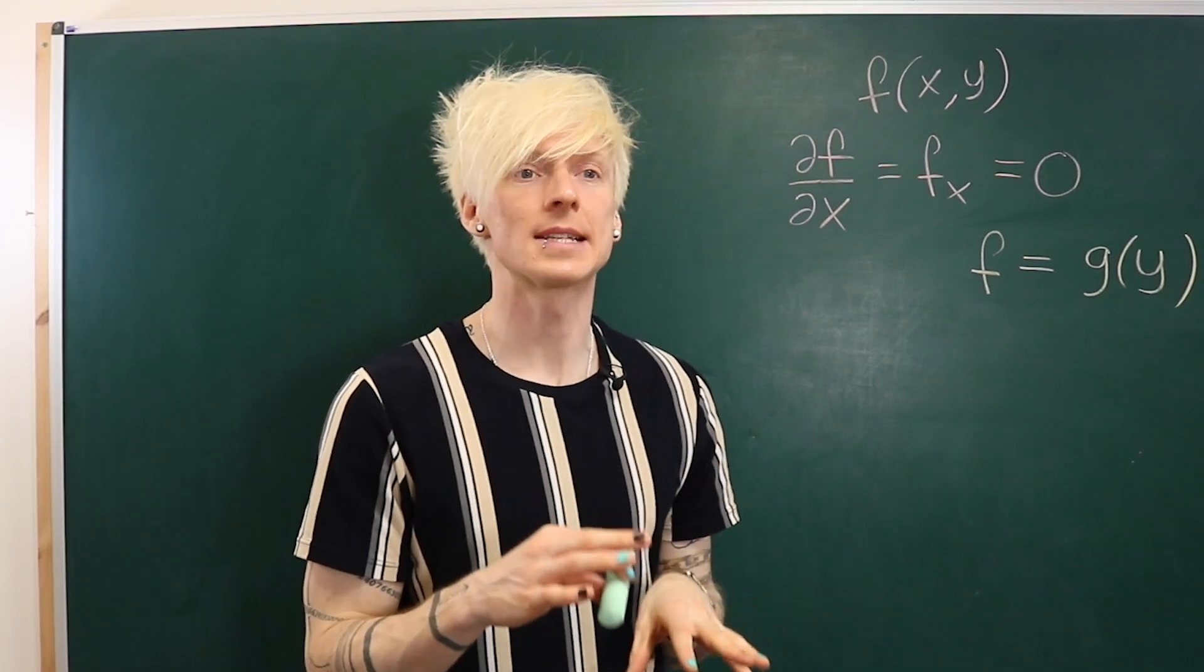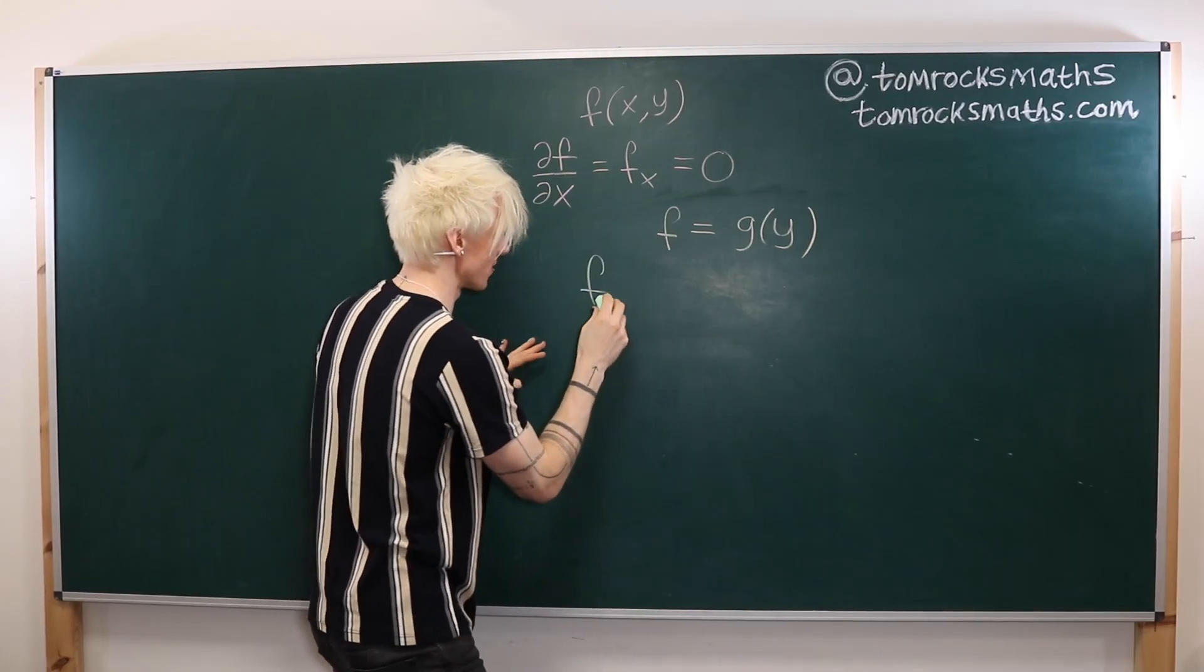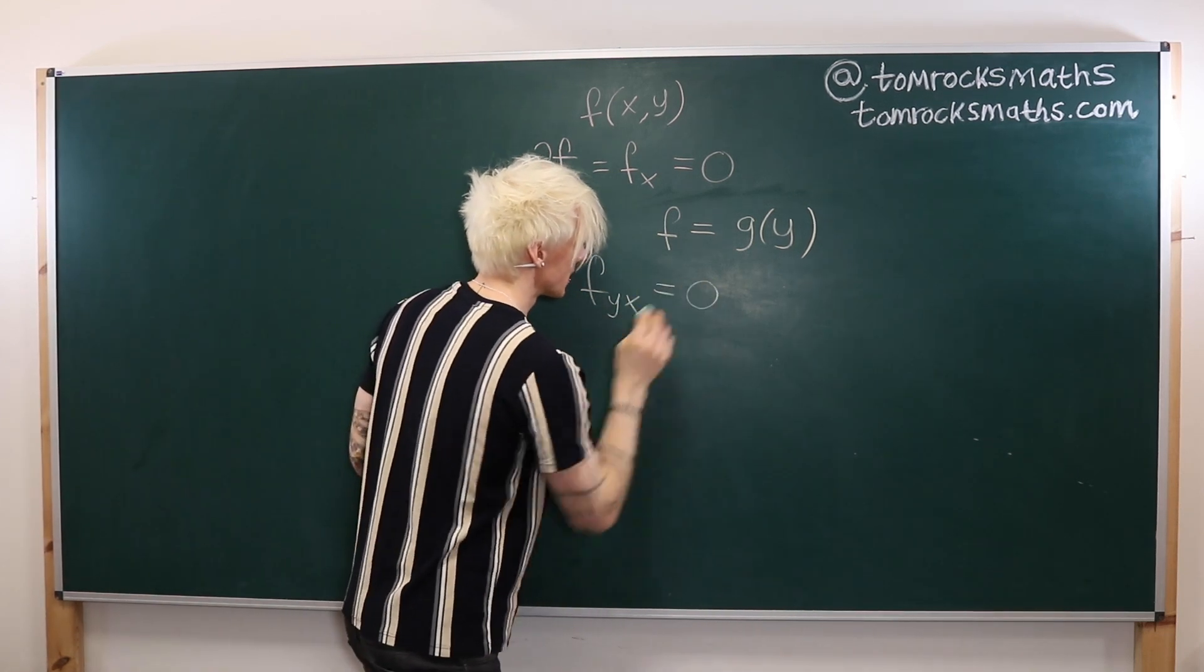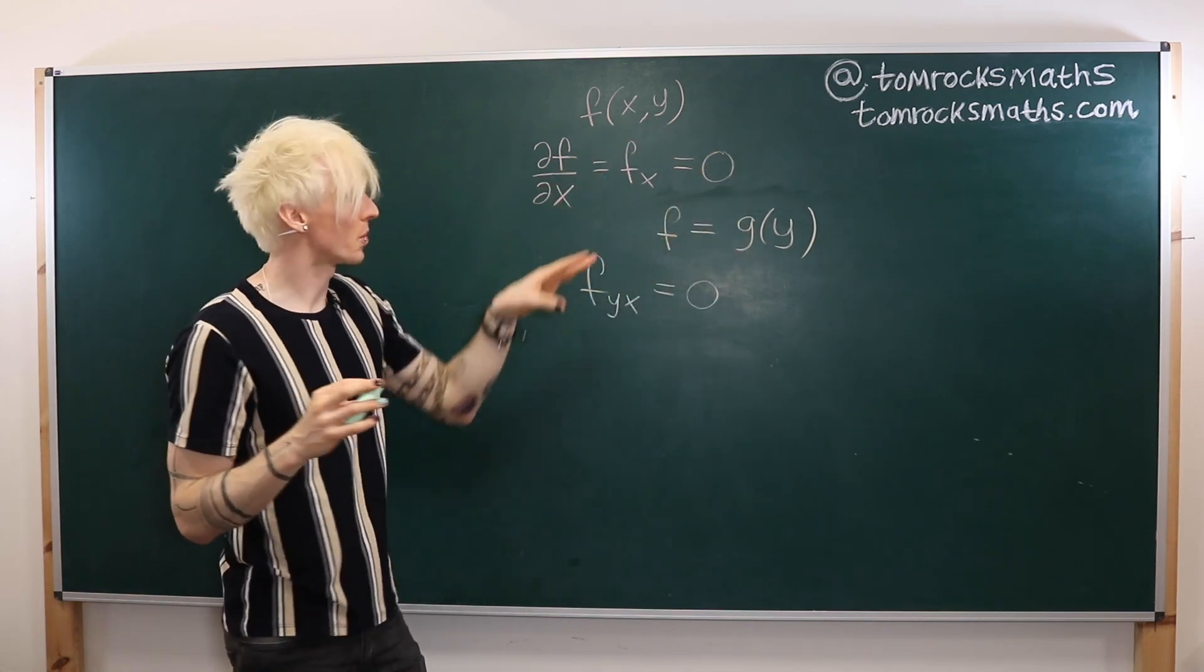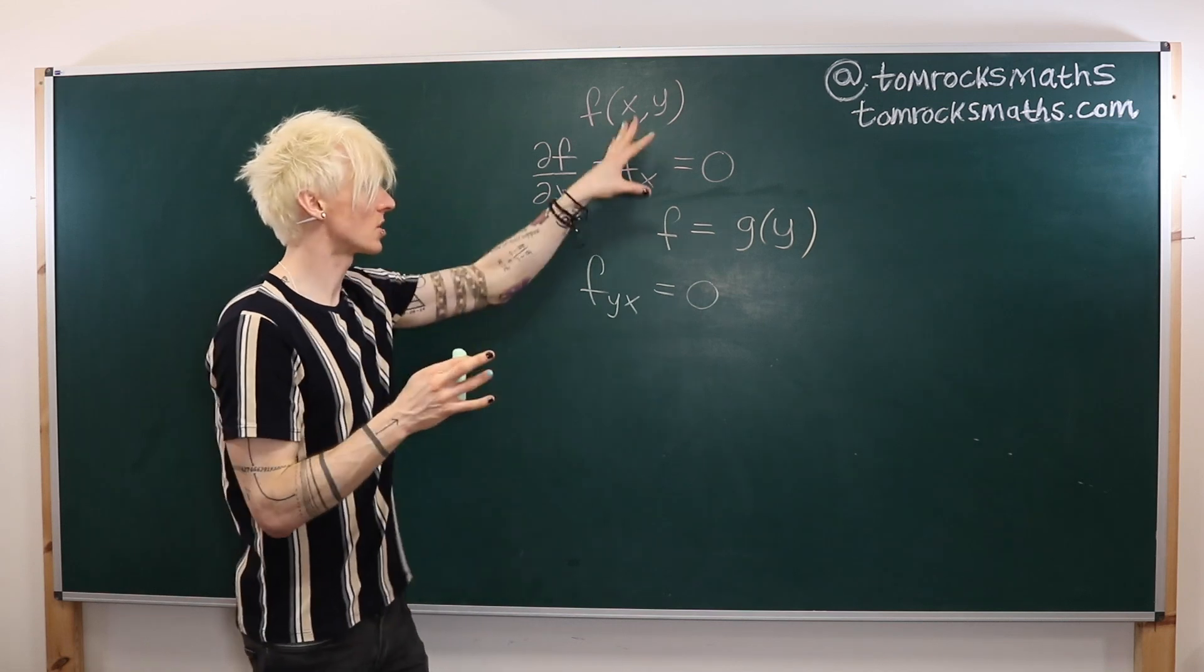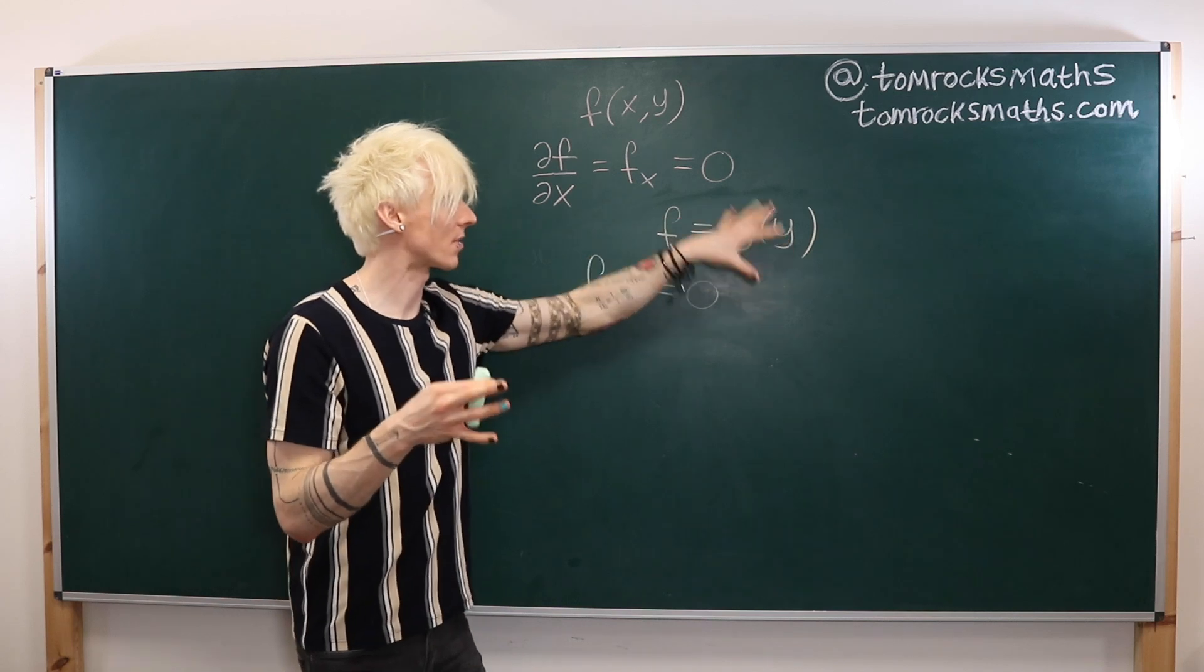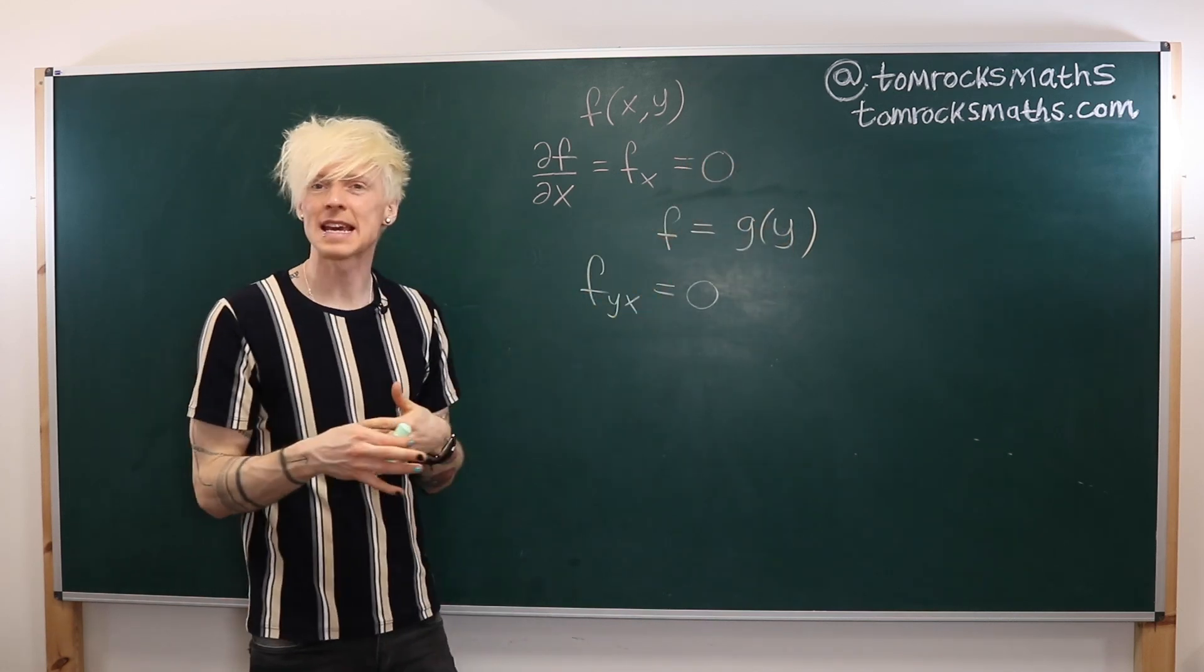Now let's try something a little harder. So let's suppose we have two derivatives ∂²f/∂y∂x is equal to zero. Now in our first example we had a single partial derivative in x and we solved that by integrating with respect to x and thinking carefully about what would differentiate to give zero. So let's do the same here.